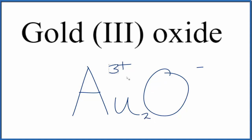Let's get rid of these charges, and that makes the formula for Gold(III) oxide: Au₂O₃.